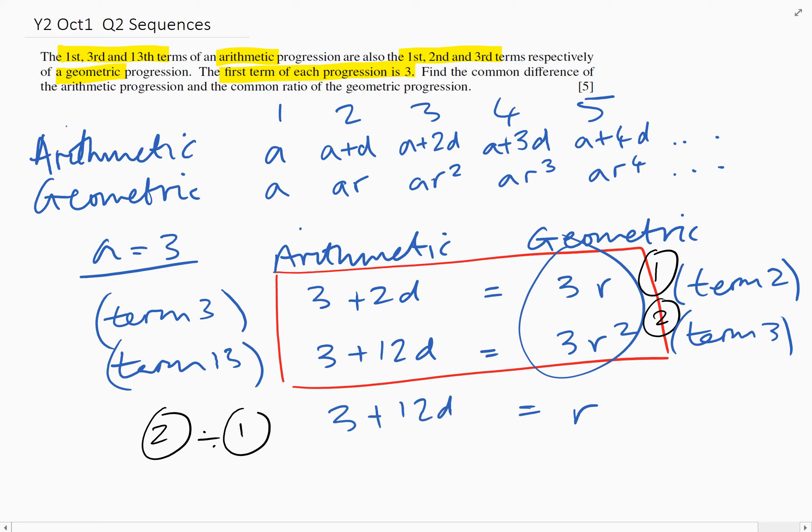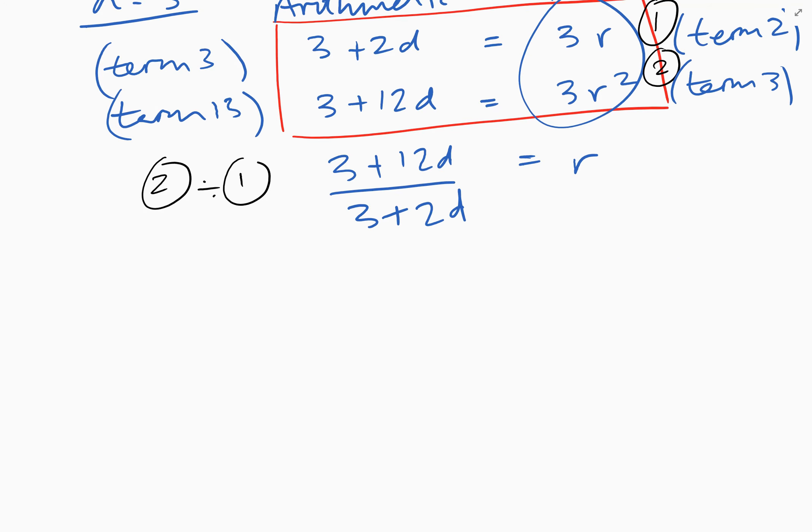And then we're going to have 3 plus 12d over 3 plus 2d over there. Now let's substitute this back into equation one, and what will that give us? The left-hand side will be 3 plus 2d equals 3 times by all of this, so 3 plus 12d over 3 plus 2d.